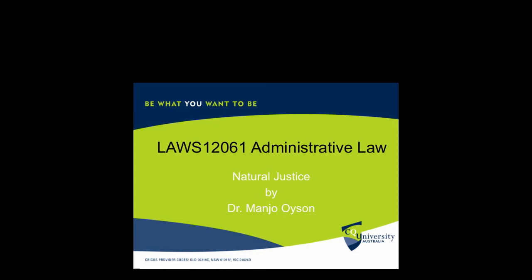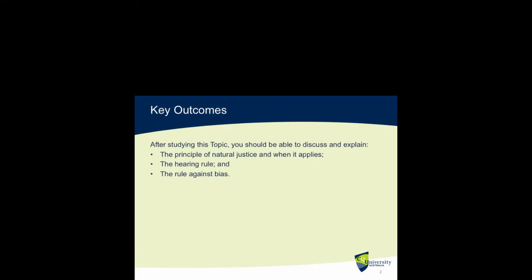Hello everyone. This week, in week 7, we talk about natural justice as one of the key principles of administrative law. After studying this topic, you should be able to discuss and explain the principle of natural justice and when it applies. We will also know more about the hearing rule as well as the rule against bias.